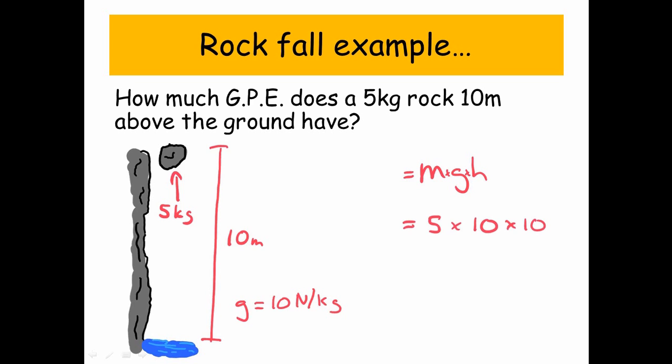So let's put the numbers in. Well, the mass of the rock was 5, gravitational acceleration on Earth is 10, and the height is also 10. So our final answer is 500 joules, and the units are going to be joules because it's gravitational potential energy. We measure energies in joules.